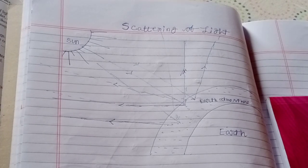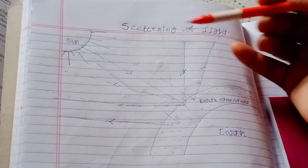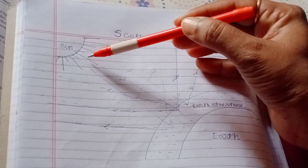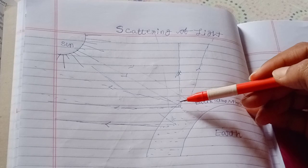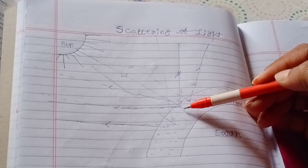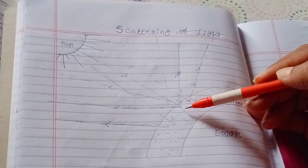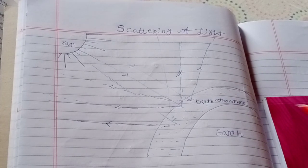Hello to all students. Today's topic is scattering of light — I'm going to give you the basic concept. In this picture we can see light waves emerging from the sun and traveling through the vacuum. After that it enters into the earth's atmosphere, and we already know earth's atmosphere contains a large number of small particles.